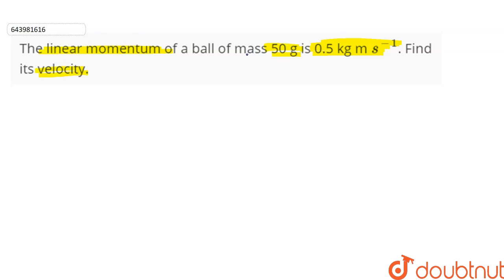So we are given the mass of the ball 50 grams. So M is equal to 50 grams or in SI units is equal to 50 upon 1000 kilograms or 0.05 kg. The linear momentum denoted as P is equal to 0.5 kg meter per second.